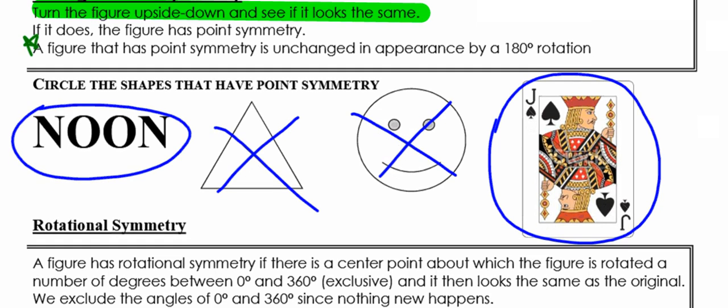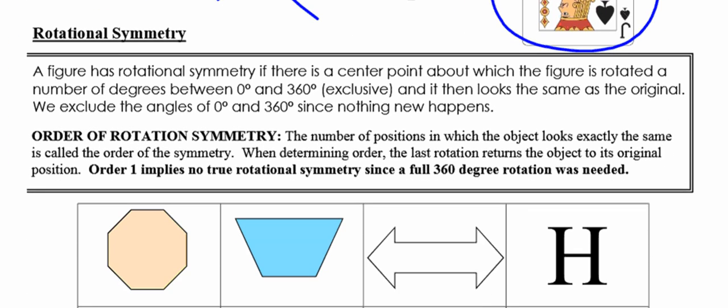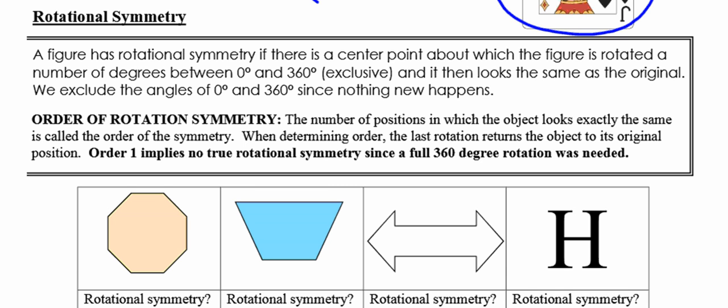Now we're going to talk rotational symmetry. Point symmetry actually is a form of rotational symmetry. We say that rotational symmetry exists if there's a center point about which we can rotate our figure some number of degrees — between but not including 0 and 360 — where it will again appear exactly the same as the original. We're not going to include 0 degrees and 360 degrees because they're the same as the original; nothing new is happening. The order of rotational symmetry is the number of positions in which the object remains exactly the same. When determining the order, the last rotation which returns the object to its original position is not counted. An order of 1 has no true rotational symmetry since it requires a full 360-degree rotation to map the figure onto itself.